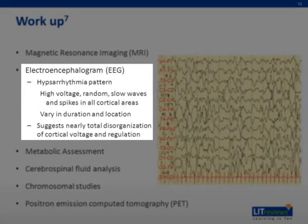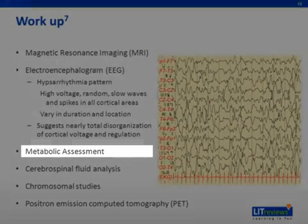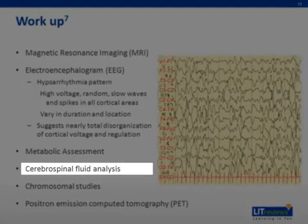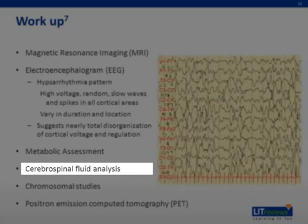Electroencephalography, EEG, is essential to identify the pathognomonic brain wave pattern seen in IS called hypsarrhythmia. This pattern consists of high-voltage, random slow waves and spikes in all cortical areas that vary in duration and location and appear to originate from one part of the cortex at one moment, then from another or from multiple foci a few seconds later. Hypsarrhythmia suggests near-total disorganization of cortical voltage and regulation. A fairly comprehensive metabolic assessment is undertaken, including a pyridoxine challenge, urine for organic acids, serum for amino acids, and a biotinidase determination. Cerebrospinal fluid analysis is undertaken to look for specific neurotransmitters, lactic acid, amino acids, folate metabolites, glucose, and glycine.